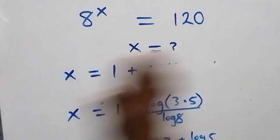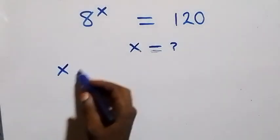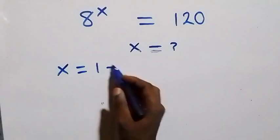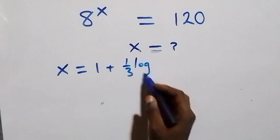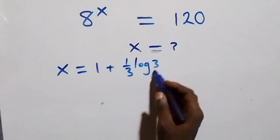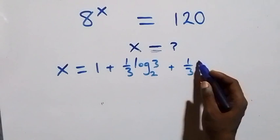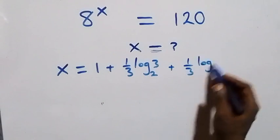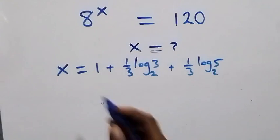We substitute the value of x, which is 1 plus (1/3)·log₂3 plus (1/3)·log₂5, back into the original equation. This means we evaluate 8 raised to that power.